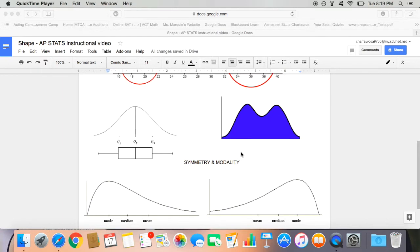Modality refers to the distribution's peaks. The distribution is unimodal if it is single-peaked and bimodal if it's two-peaked. There's also such a thing as multi-peaked, which is more than two peaks.